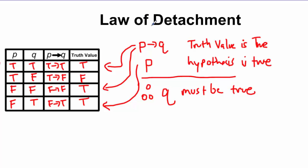That's how we use the law of detachment. It's like doing an investigation: if I give you these conditions — all the possible ways conditional statements can be arranged — and I tell you the conditional is true, there are only three out of four ways that can happen. If I also tell you the hypothesis is true, there's only one case where both the conditional and the hypothesis are true, and that's when Q is true. That's the law of detachment.